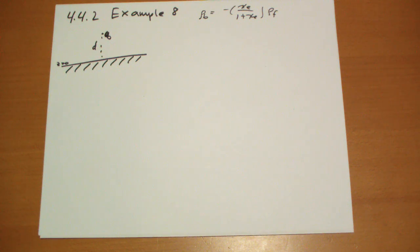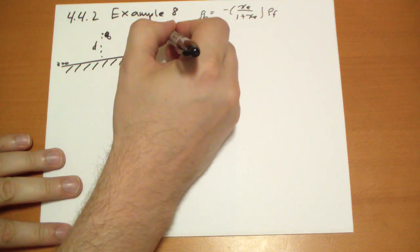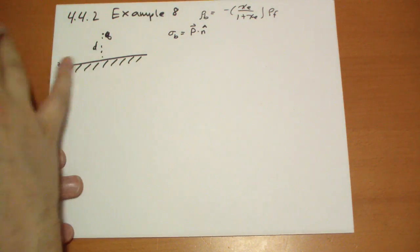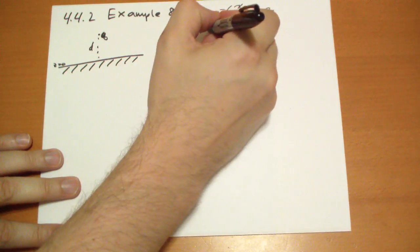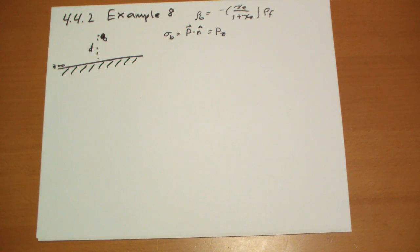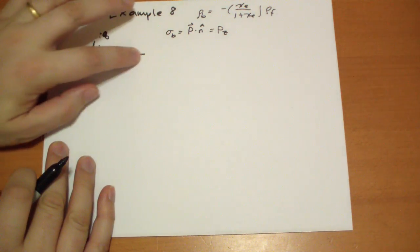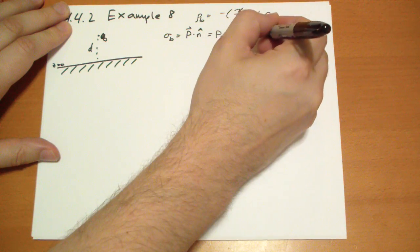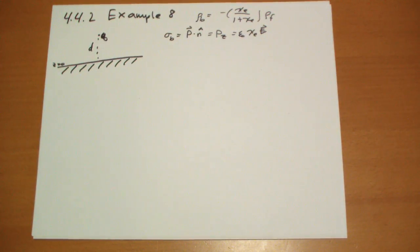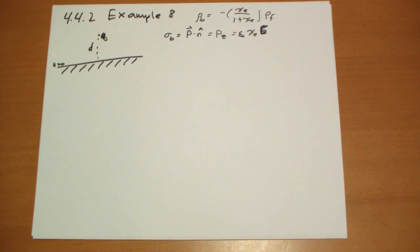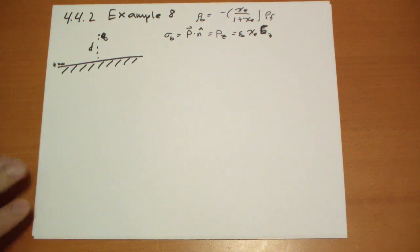We remind ourselves that the surface bound charge is just the polarization dot the n-hat vector. In this case the normal vector is k-hat, so we just take the Z-component of the polarization to get the surface bound charge. Because this is a linear dielectric, the polarization at the surface equals epsilon-naught times chi_E times the electric field in the Z direction just inside the surface.